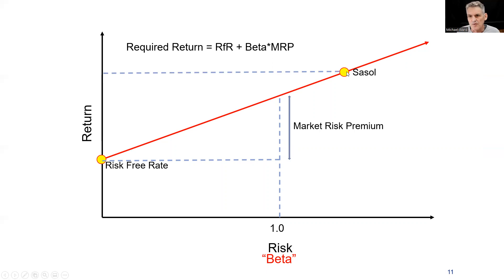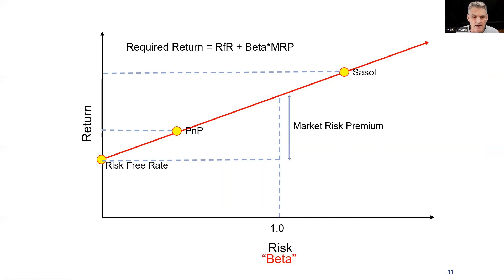If you're a risky company like Sasol, for example — which is a petrochemical company — you're going to have a risk factor of maybe 1.8, and we can plug that in. It's going to tell us that shareholders require something more like 12% for a less risky company, and we're just plugging it into this equation.